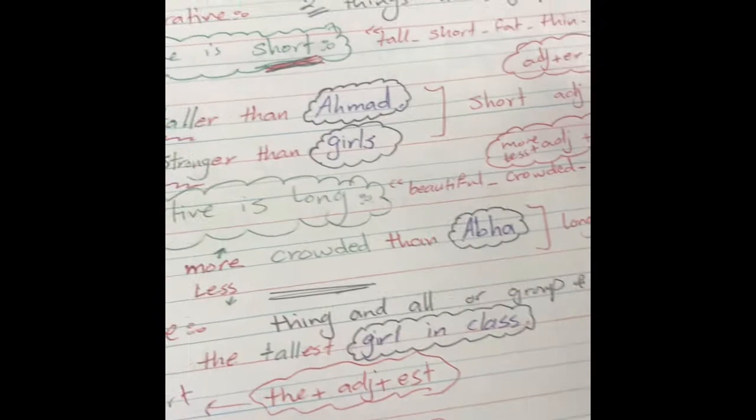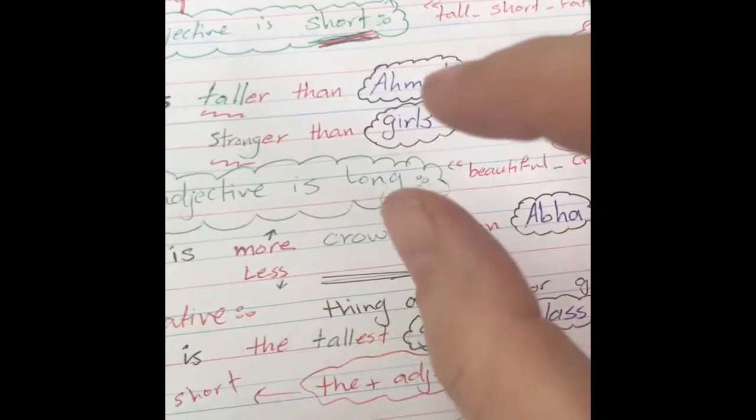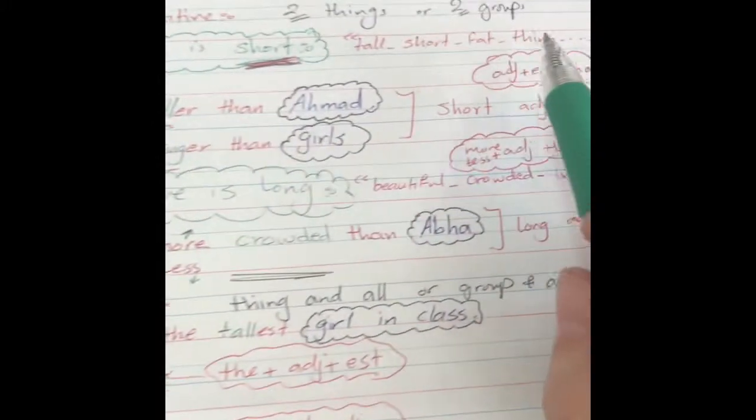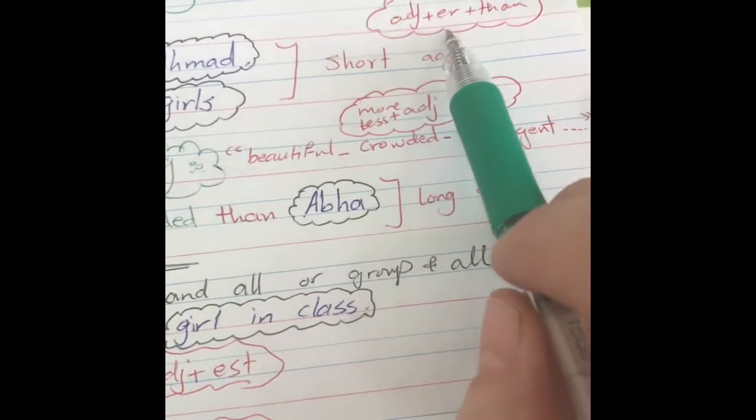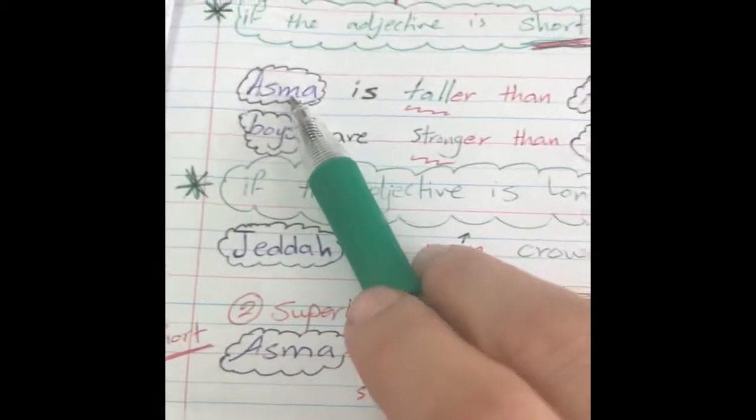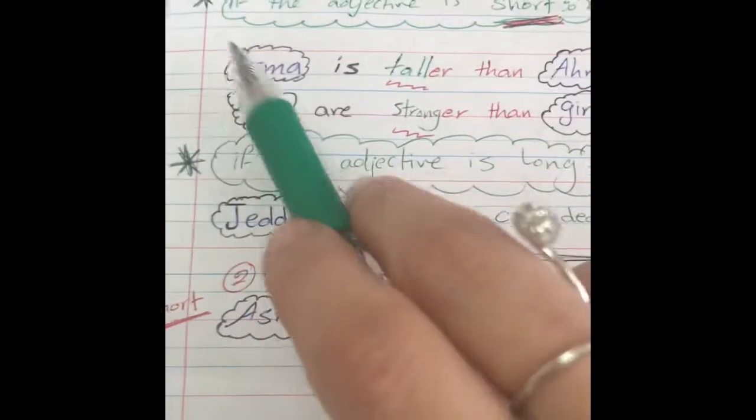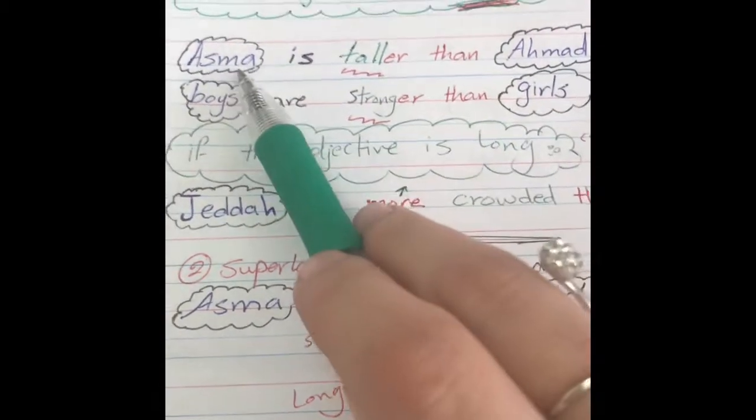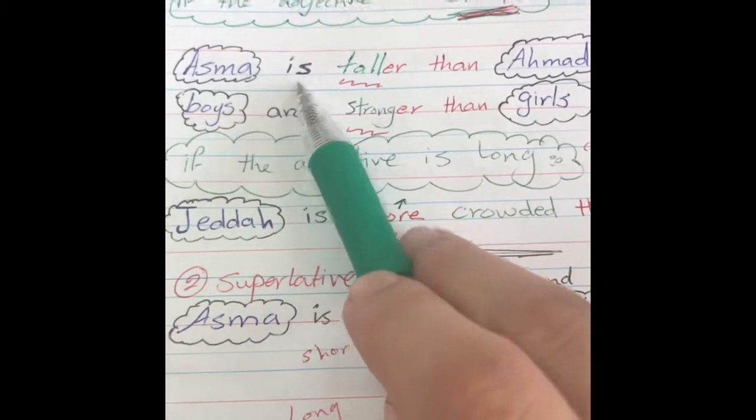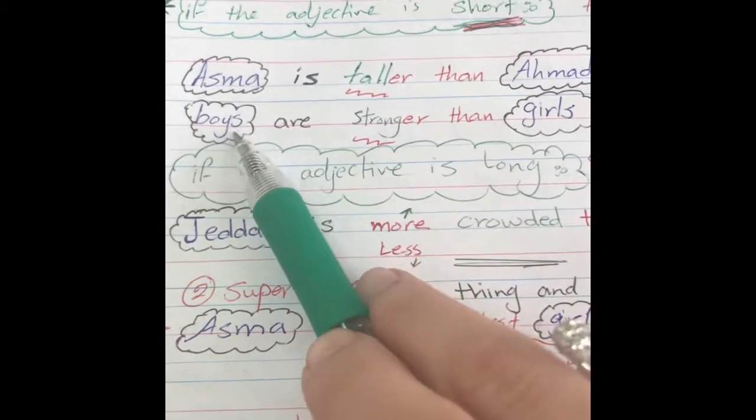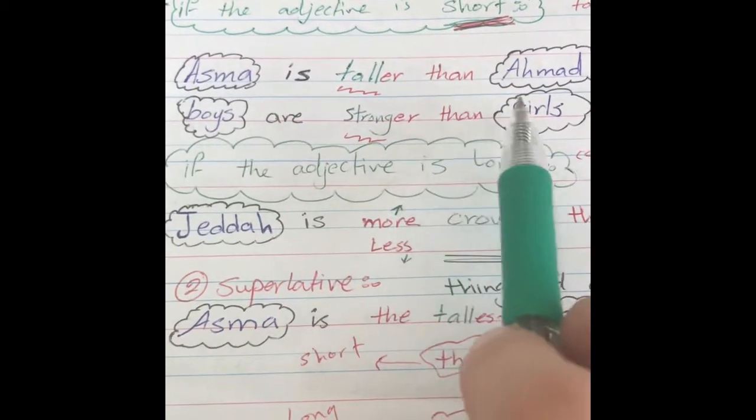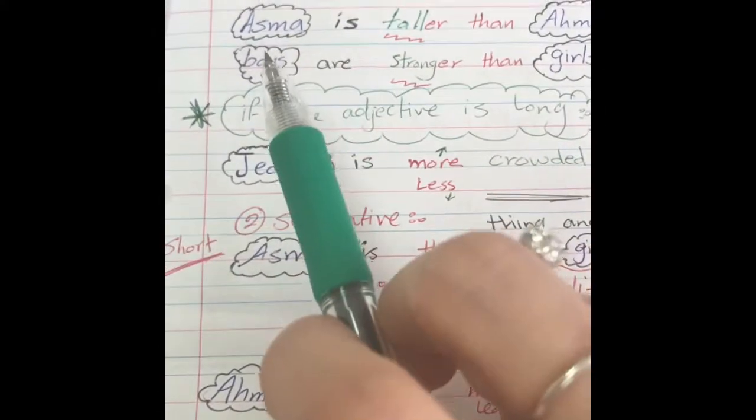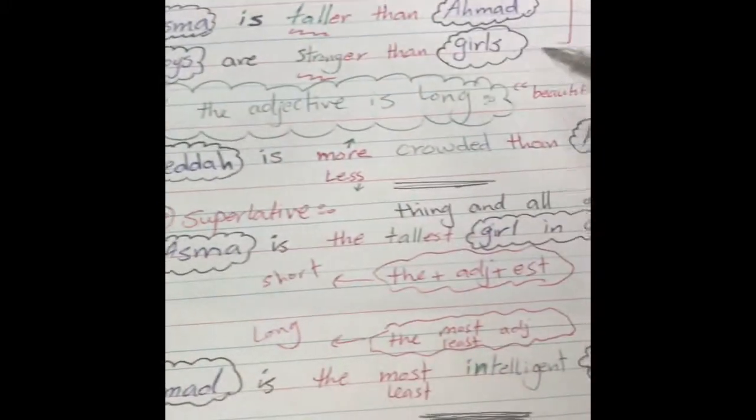Short adjectives like tall, short, fat, thin. Here the adjective is short. What do I do? I have adjective plus er plus than. So I have two things or two groups of things, and I can bring them. For example, Asma and Ahmed. Asma is taller than Ahmed. Boys are stronger than girls. So adjective er than.